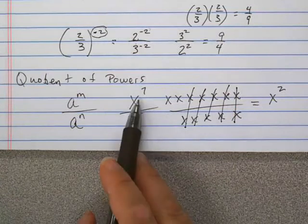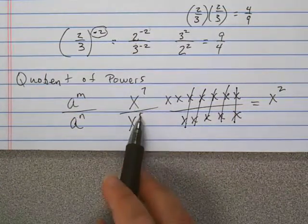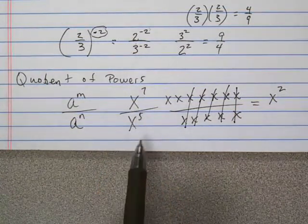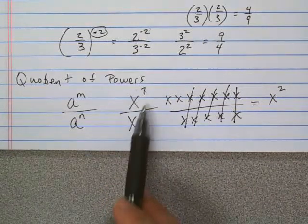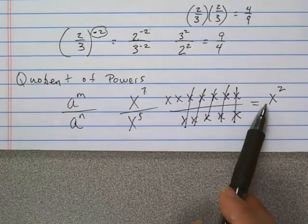So what you could have done here is just subtracted these numbers because we had more x's on top. So these five cancel with five of those and leave two on top.